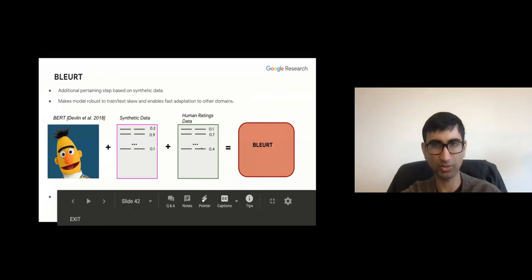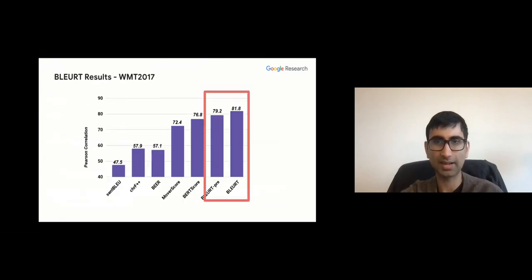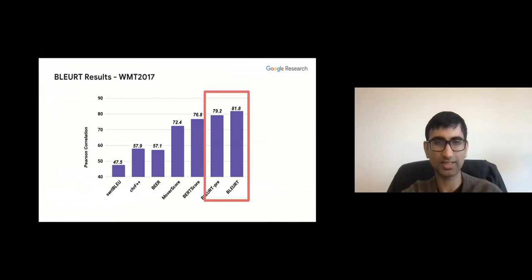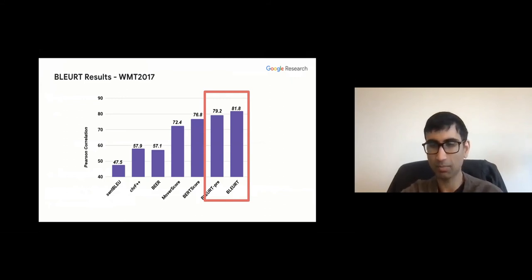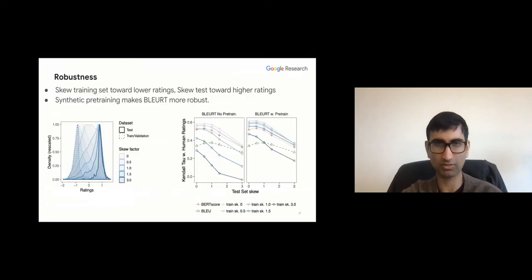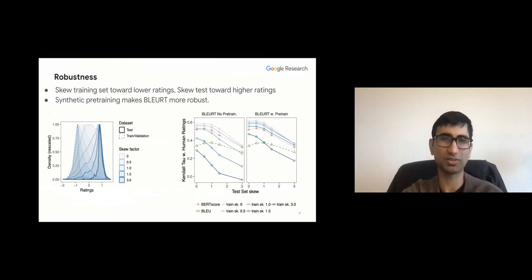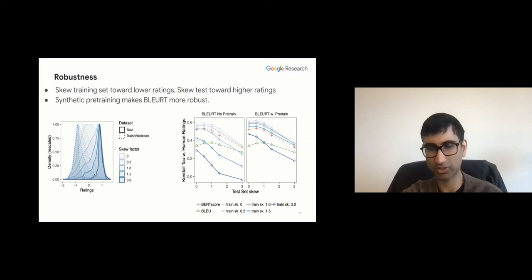We use a bunch of multitask signals for noisy supervision: BLEU, ROUGE, BERTScore, entailment, back-translation probability, and many other metrics. We perform the pre-training stage, then fine-tune on the small amount of human ratings data. BLURT without synthetic pre-training — just vanilla fine-tuning on ratings data — is already state-of-the-art. Adding pre-training gains an additional two Spearman correlation points. When we stress-test for robustness by skewing the training set toward lower ratings and the test set toward higher ratings, synthetic pre-training helps considerably.